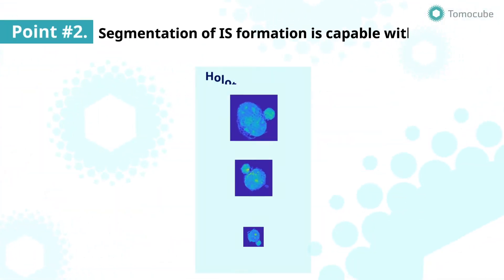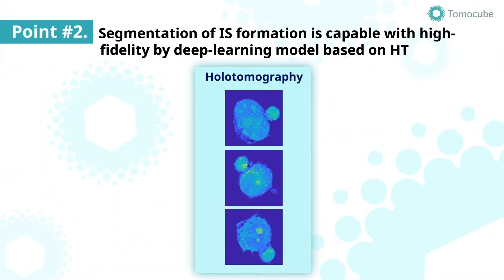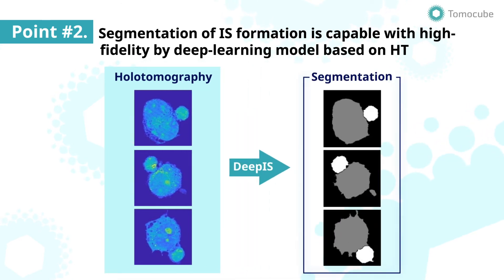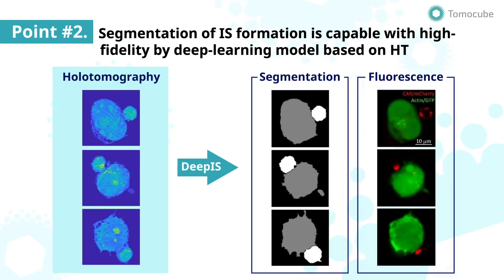A recent study by Lee et al. has shown that deep learning can be applied to the 3D holotomogram to segment immune and cancer cells with high fidelity. Verification of segmentation results with fluorescence-labelled images shows that deep learning using HT data performs with high accuracy and reliability.